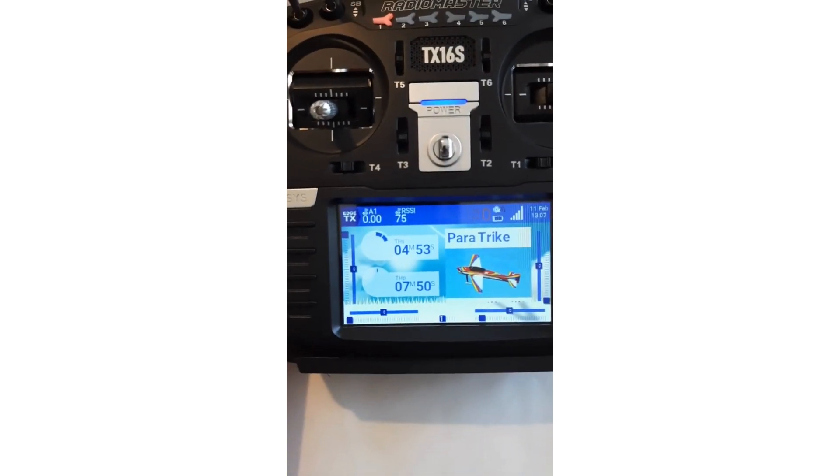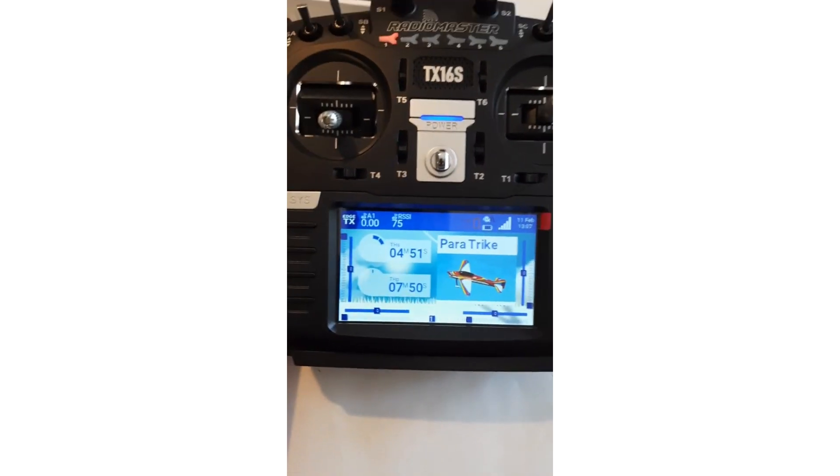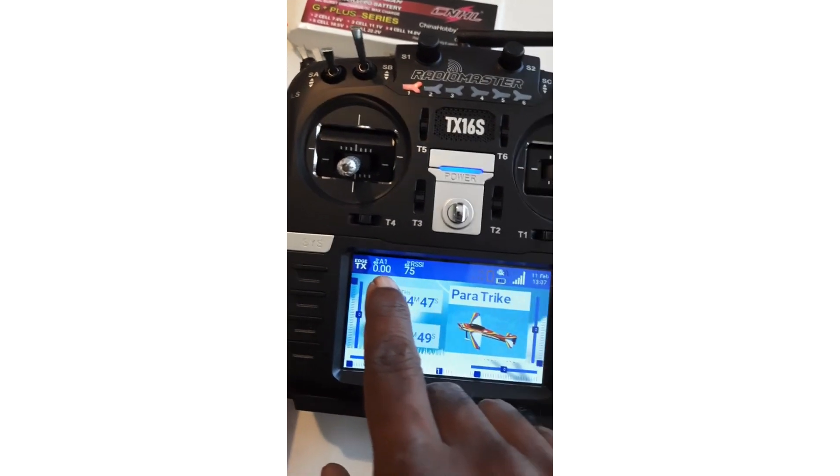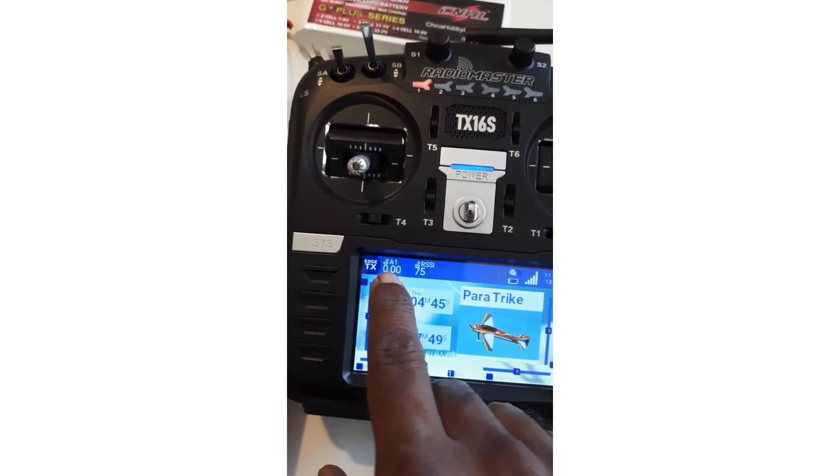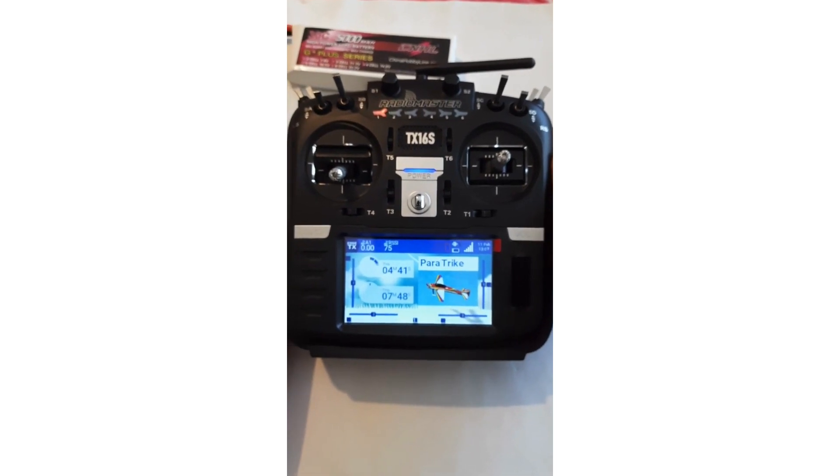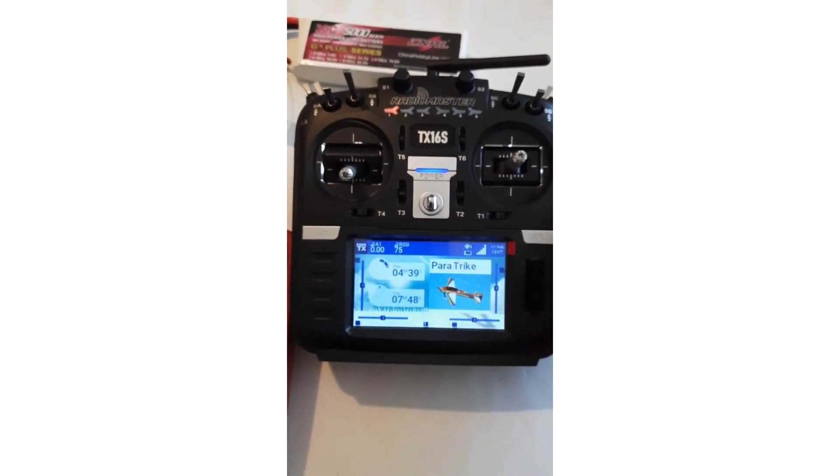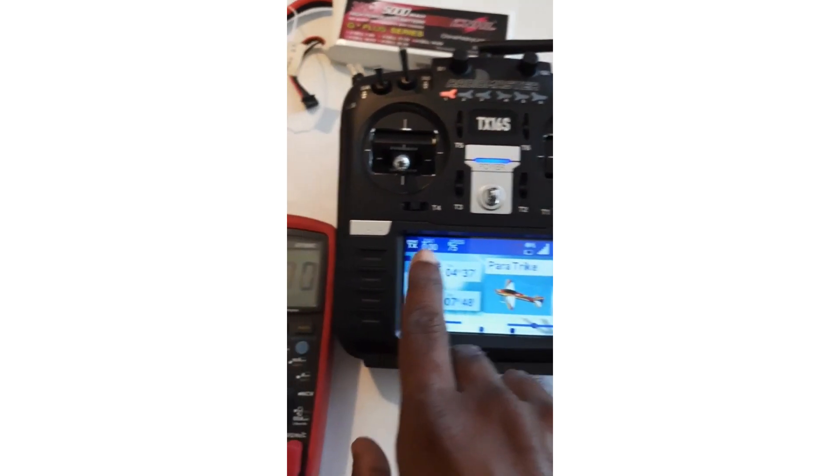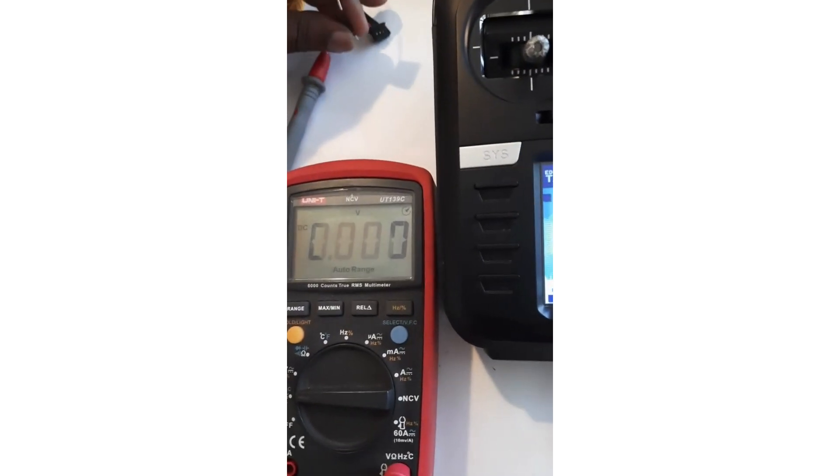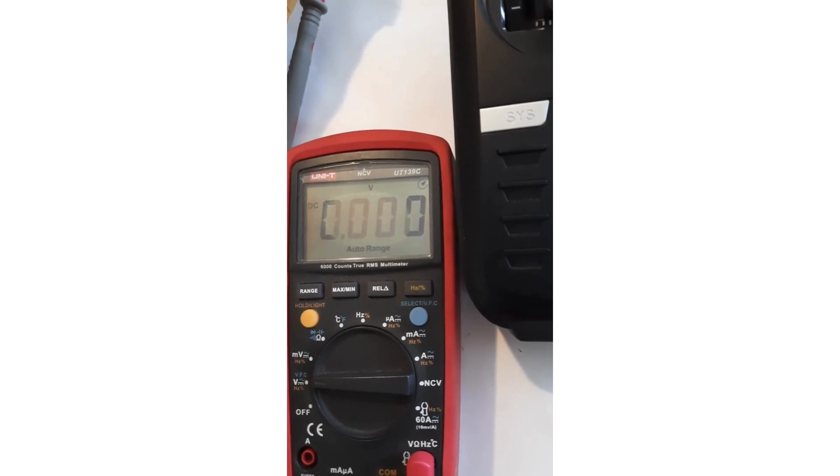In my transmitter I have set up the transmitter in the way that it shows the telemetry voltage in here and also set up to rate the voltage. It says zero volts. So now I am going to connect this sensor wire to the battery voltage.